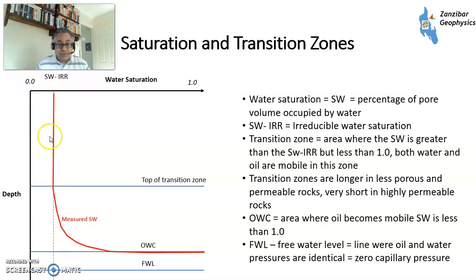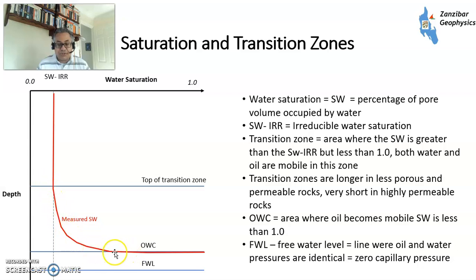When you're above the transition zone, you should be at irreducible water saturation - the rest should be mobile hydrocarbon. In the transition zone, you tend to have both mobile hydrocarbons and mobile water. The SW tends to go up until it reaches one at the oil-water contact. The free water level is where the capillary entry pressures for both oil and water are identical.